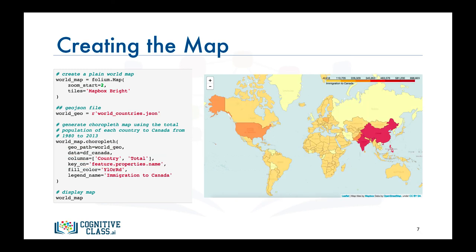And there you have it — a choropleth map of the world showing the intensity of immigration to Canada from different countries worldwide. In the lab session we explore choropleth maps in more detail, so please make sure to complete this module's lab session. With this we conclude our video on choropleth maps.